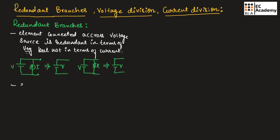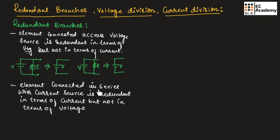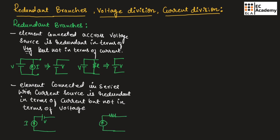Any element connected in series with a current source is redundant in terms of current, but not in terms of voltage. Any element connected in series with a current source will have the same current but a different voltage. If we consider this circuit, the current source and voltage source are connected in series. Since this voltage source is connected in series with the current source, this voltage source is redundant. We can redraw the circuit and write only the current source.